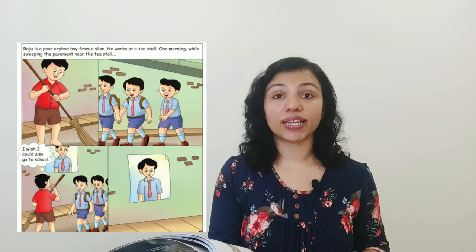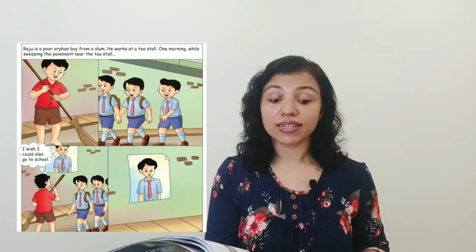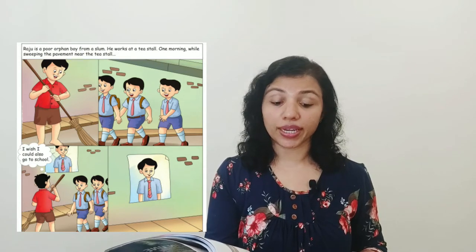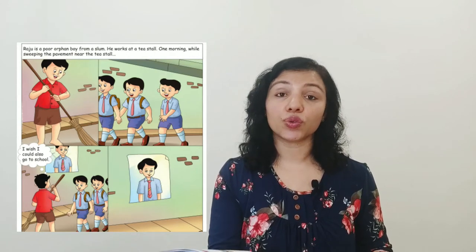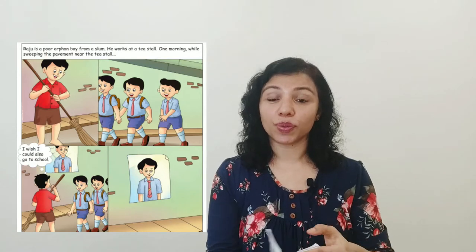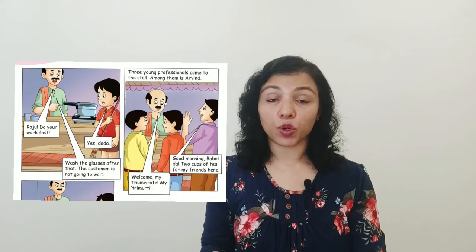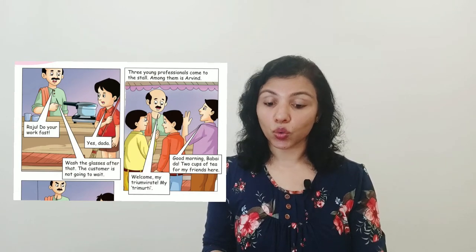This small boy Raju is from the slum. He works at a tea stall. One morning while sweeping the pavement — pavement is a footpath — near the tea stall, he is thinking: 'I wish I could also go to school.' As you can see in the picture, there are some kids going to school, and when Raju saw them, he is thinking to himself that he should also be going to school.